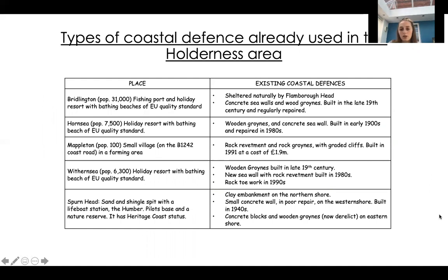Here are some coastal defences already used in the Holderness area. There are seawalls and groins around Flamborough Head. At Hornsea, wooden groins and a seawall were built in the early 1900s and repaired in the 1980s — a reminder that these structures need ongoing repair. At Mappleton, there are rock groins and revetments; the total cost of sea defences there in 1991 was £1.9 million. At Withernsea, groins and a seawall. At Spurn Head, there's a small concrete wall plus concrete blocks and wooden groins, though these have not been maintained.